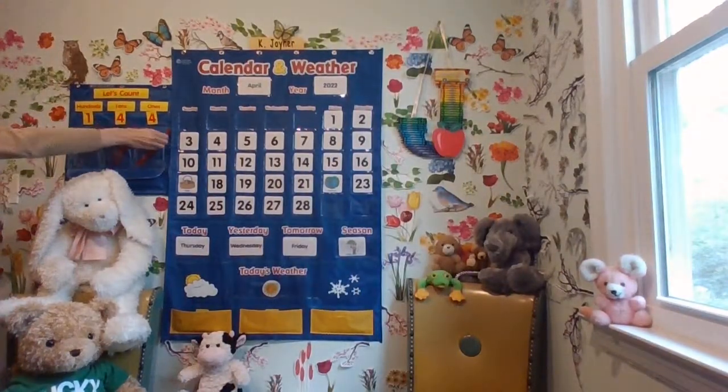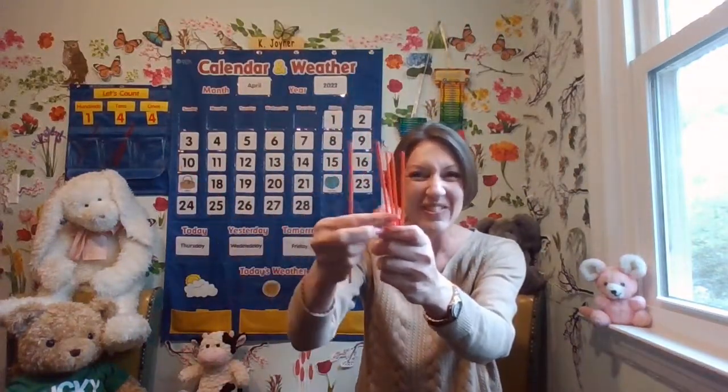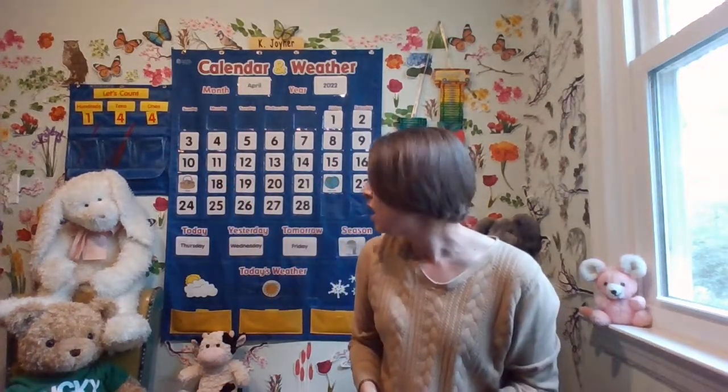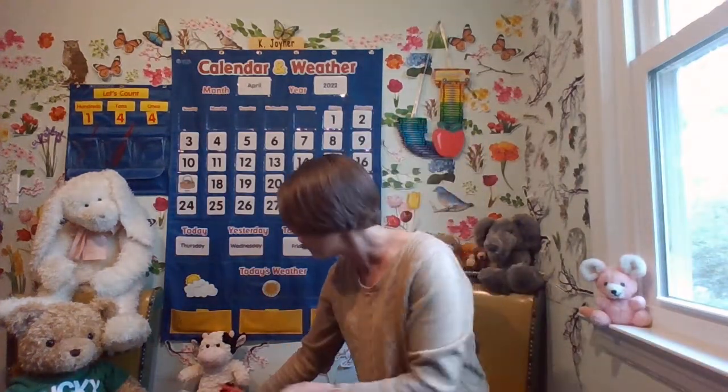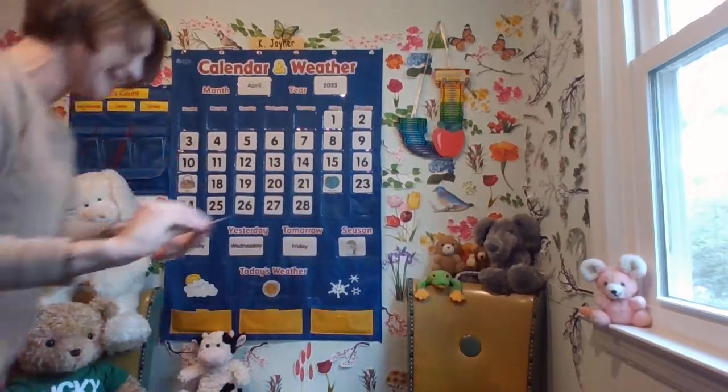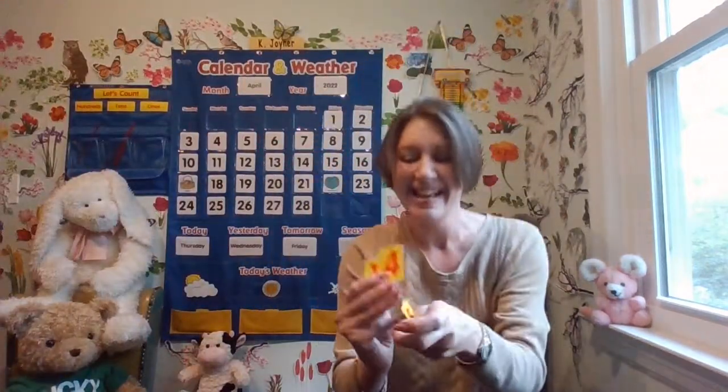Let's put the four tens back and get the four ones. Did you keep 140 in your brain? 141, 142, 143. You know what I just noticed? I made 144 — and that was yesterday. I got five counting rods, but what happened? Class family, we said yesterday's number. Let's say today's number. Are you ready? 145!